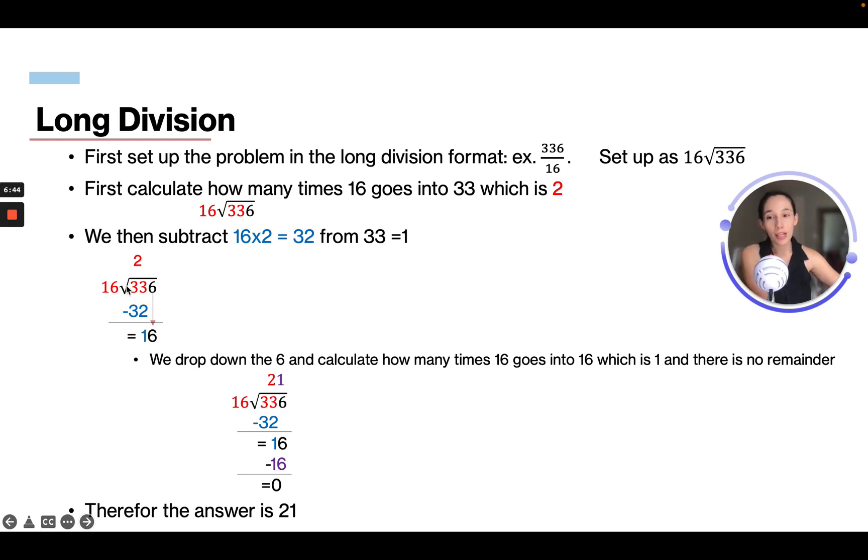So now we're gonna see how many times does 16 go into 16. Well, we know that's 1. So now we have 21 up at the top. We're subtracting 16 and we get 0. So now our answer is 21, and that's how you would set it up in a long division format.